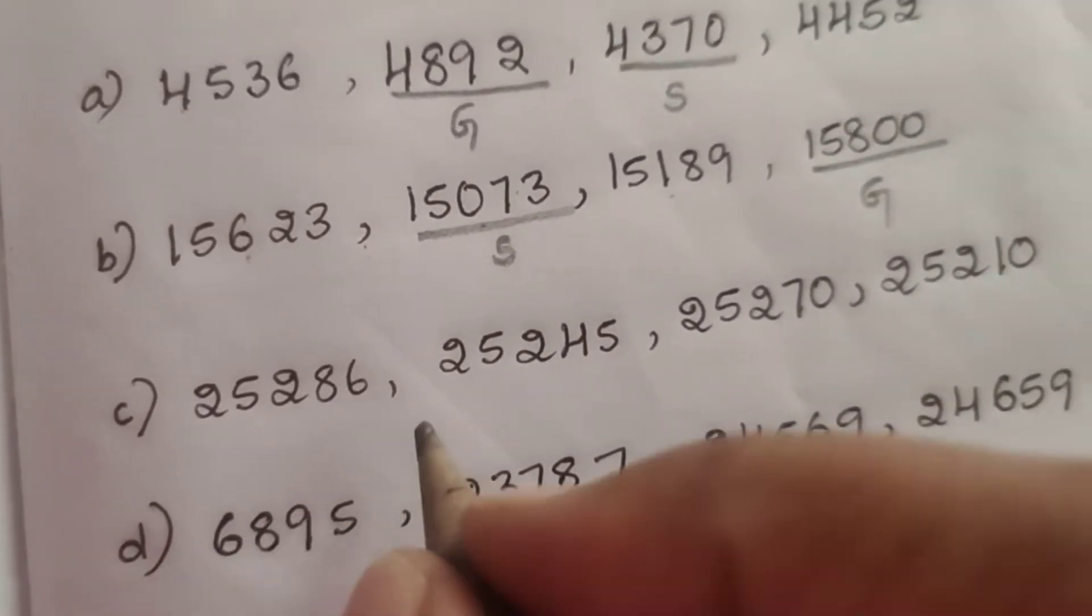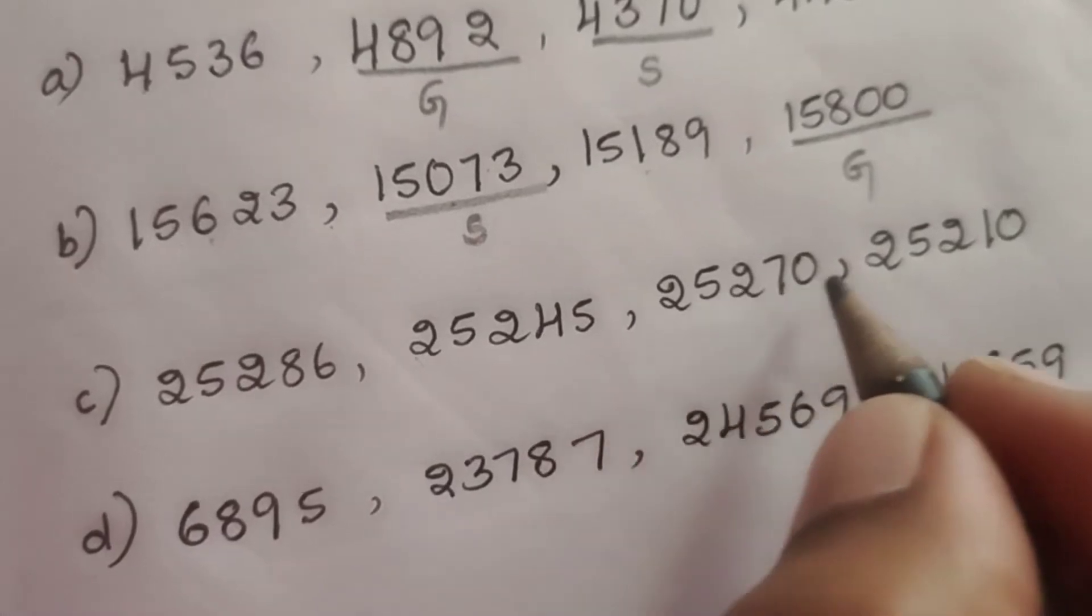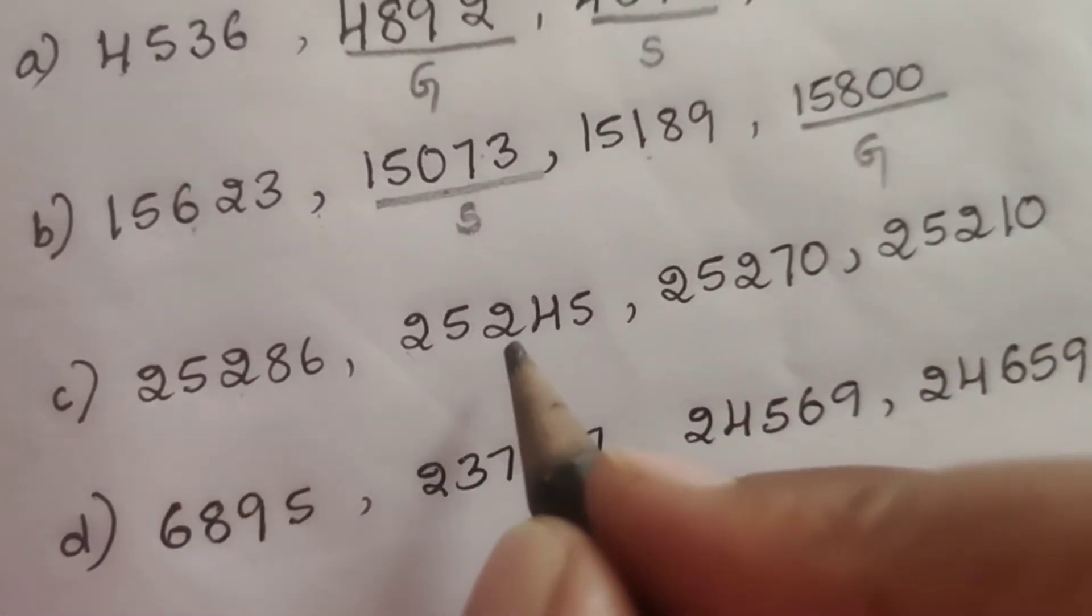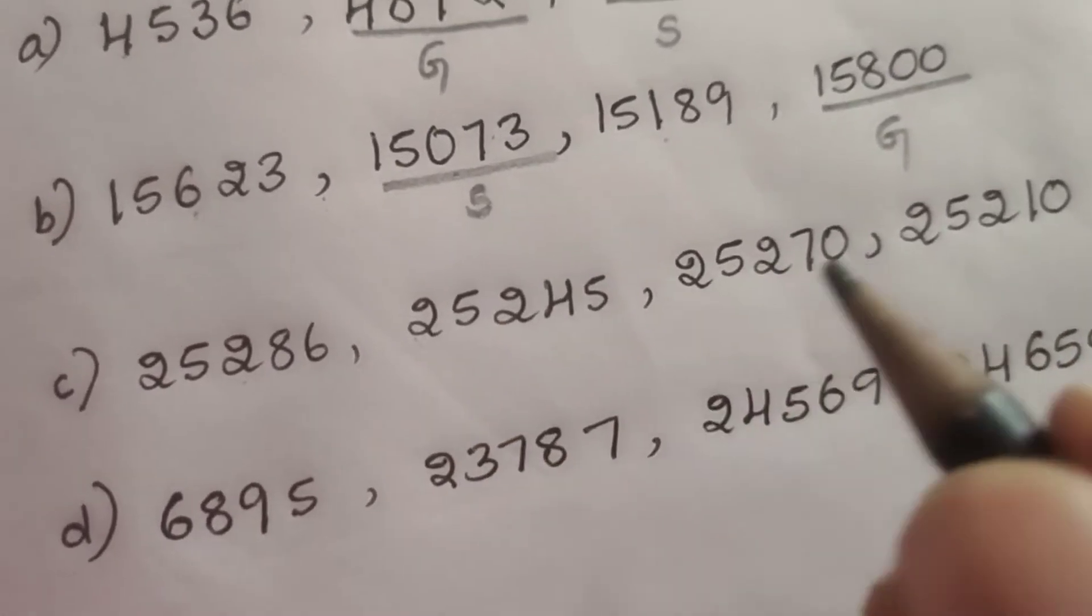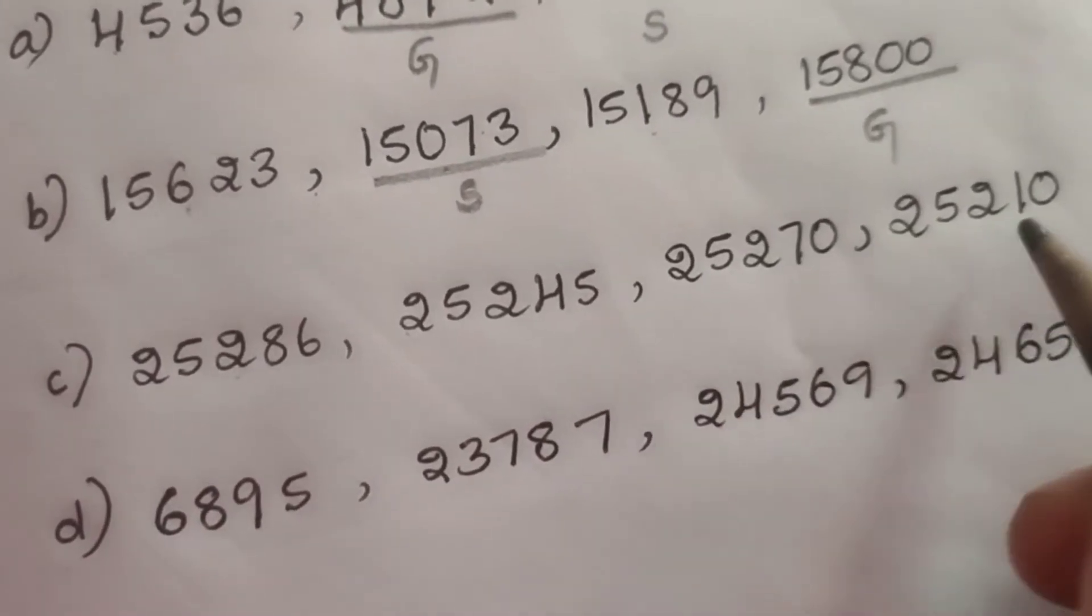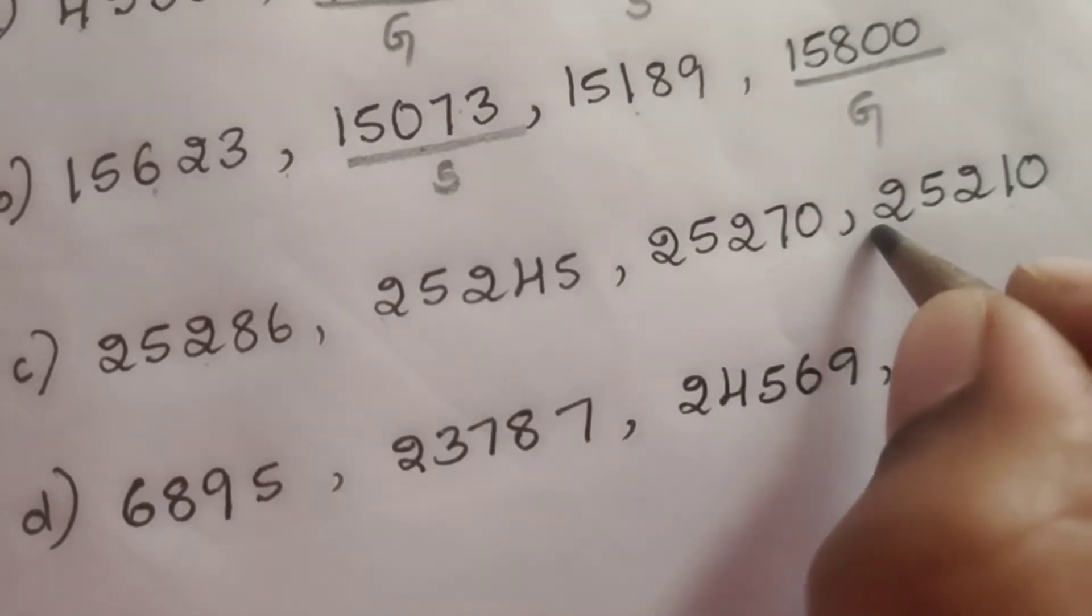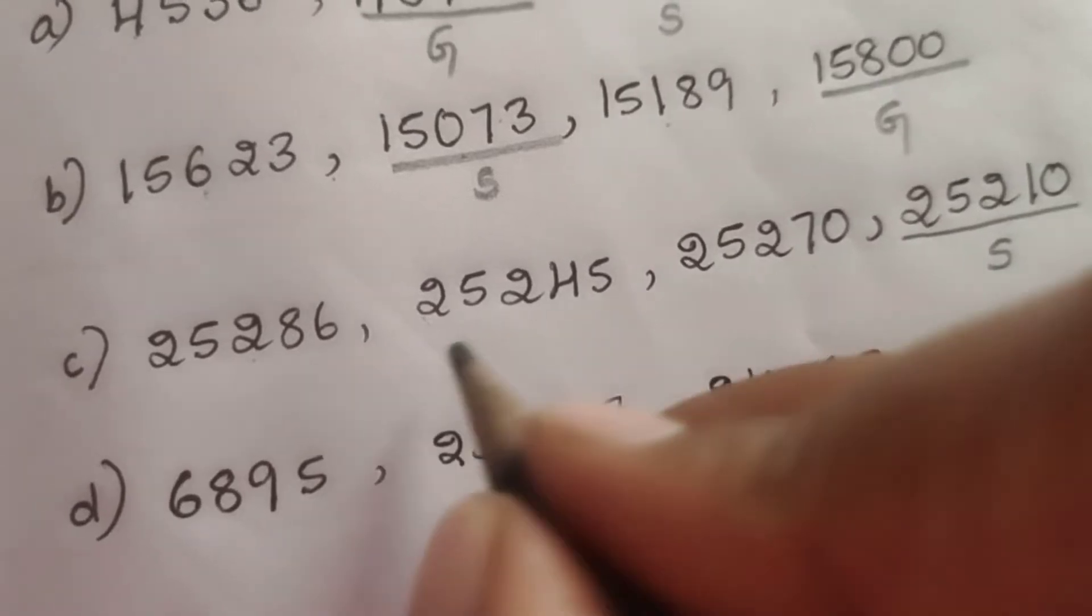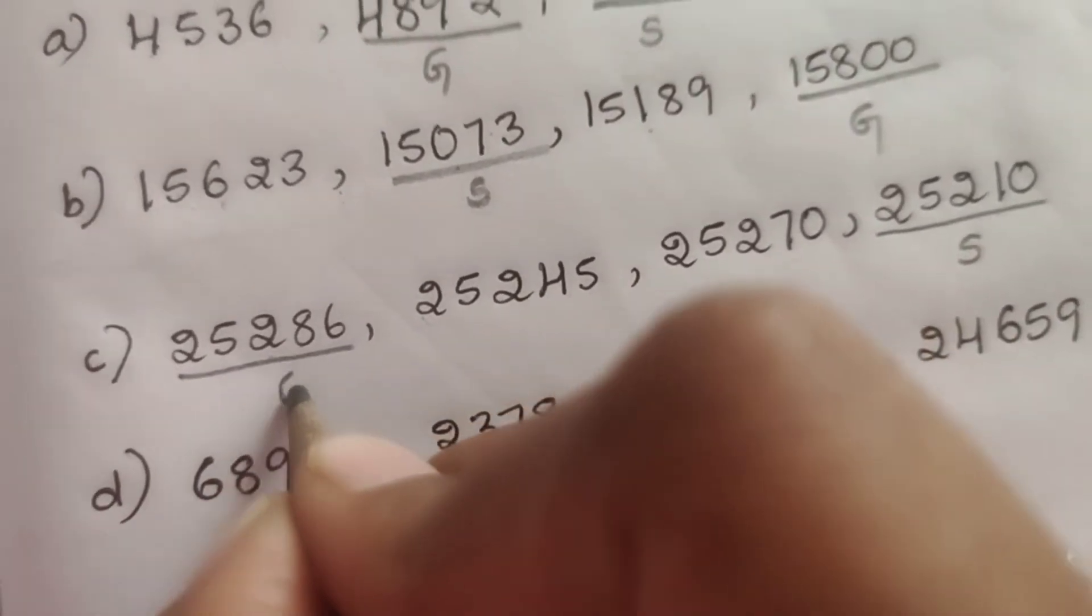Now third one. Here also in the thousands place everywhere 25,000 is there. In the hundreds place also 2 is there everywhere. Next we have to see the tens place then. Here is 8, here is 4, here is 7 and here is 1. So 1 is the smallest, right? So 25,210 is the smallest and 25,286 is the greatest.